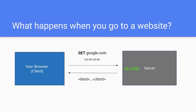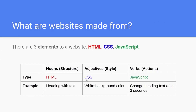What happens when you go to a website? This is the complete diagram. Your browser sends a request. DNS actually converts google.com to this IP, so this is what it actually sends it to. And then we get a code 200, which means OK. You may have seen 404 for not found — 200 means OK. And then it sends it back.